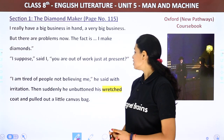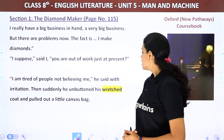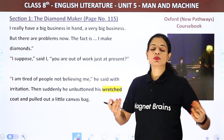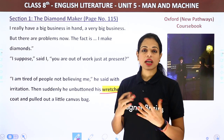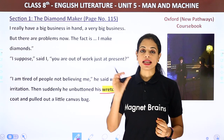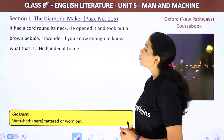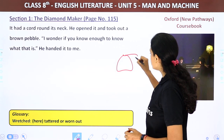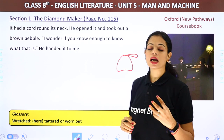'I am tired of people not believing me,' the stranger said with irritation. Then suddenly he unbuttoned his ragged coat and pulled out a little canvas bag. The bag had a cord around its neck. When he opened it, he took out a brown pebble. 'I wonder if you know enough to know what it is,' he said and handed it to the narrator.